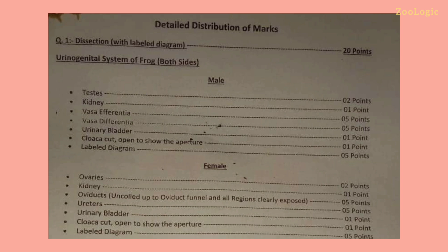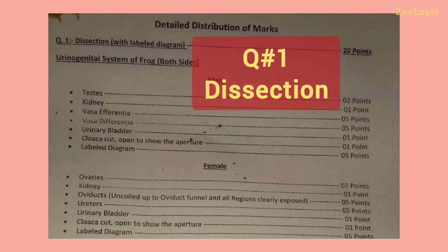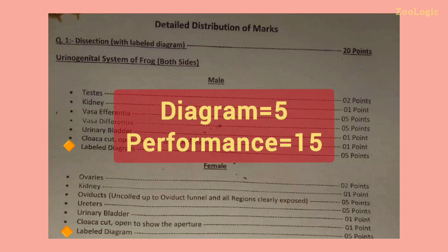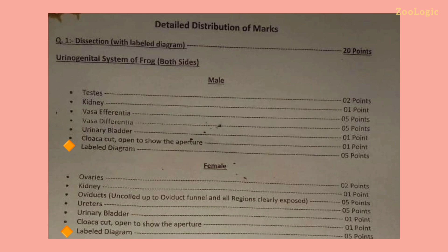Let's go into the details of marks distribution according to the Board of Intermediate Education Karachi. Starting from question one — dissection — you have to perform the practical and dissect the given animal, whether it is an earthworm, a cockroach, or a frog. You have to draw a labeled diagram of the given animal. The labeled diagram comprises five points and your performance comprises fifteen points.